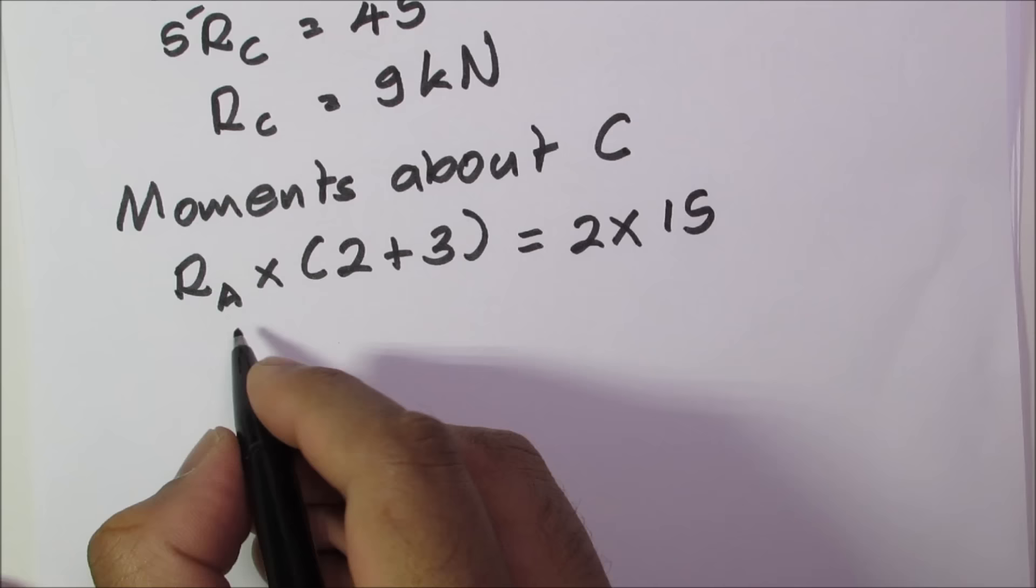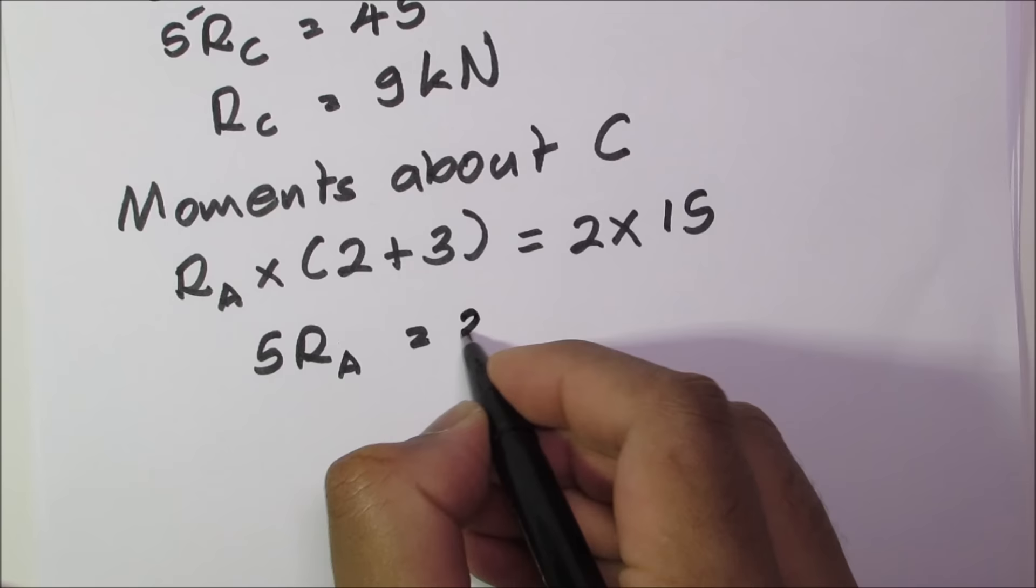We can write 5RA is equal to 30 and RA is equal to 6 kilonewtons.